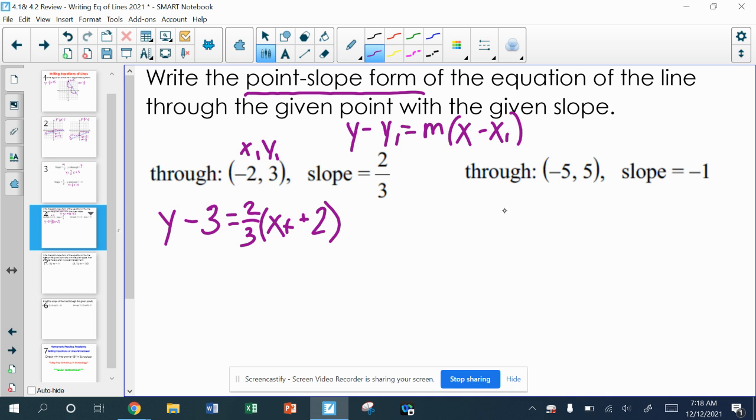On the second problem, y minus the y number is just that regular 5. The slope is a negative 1, x minus the x number is a negative 5. So you have to be careful about getting that minus and negative right there. And again, point-slope, that's done. No other work to do.